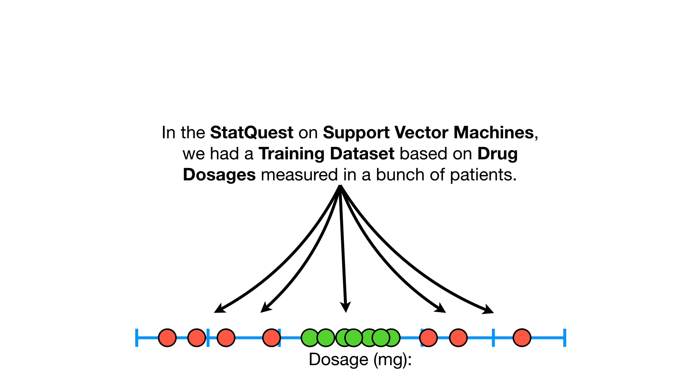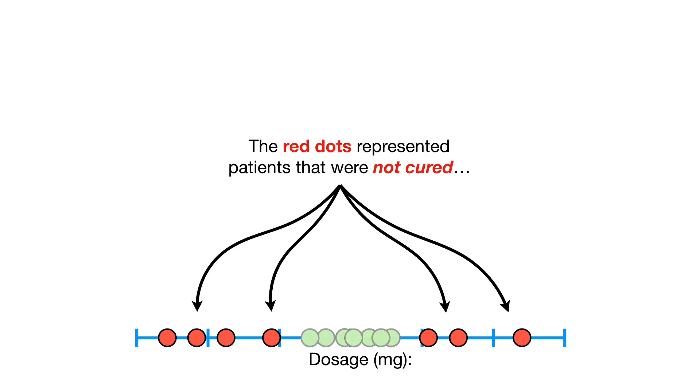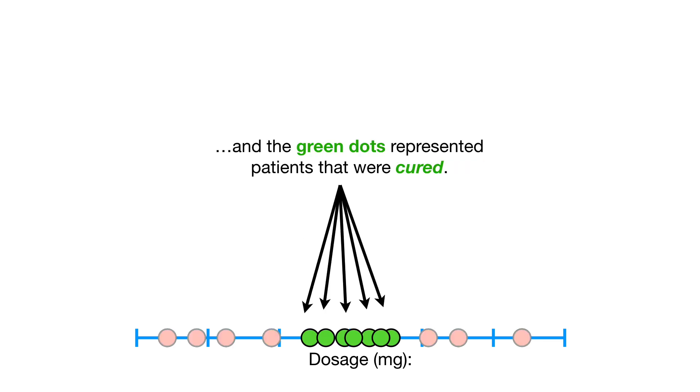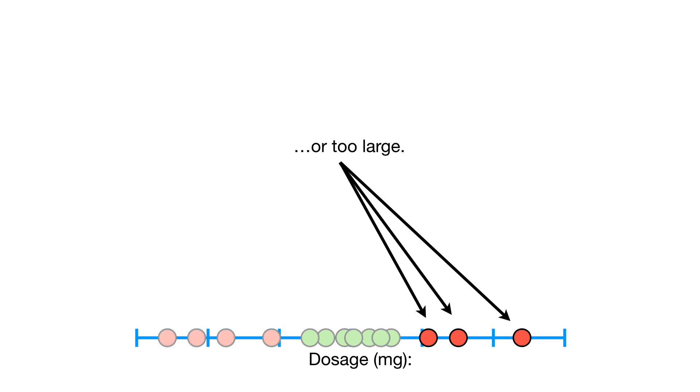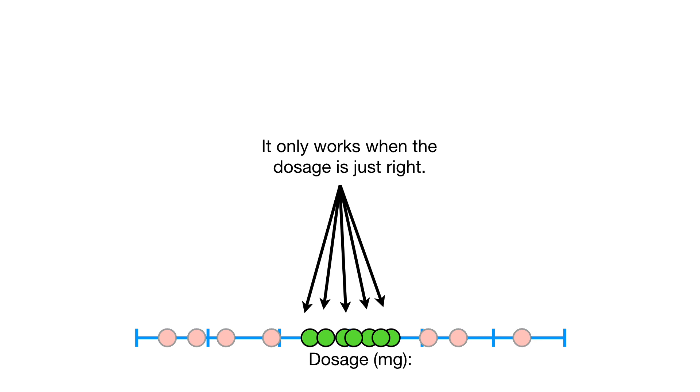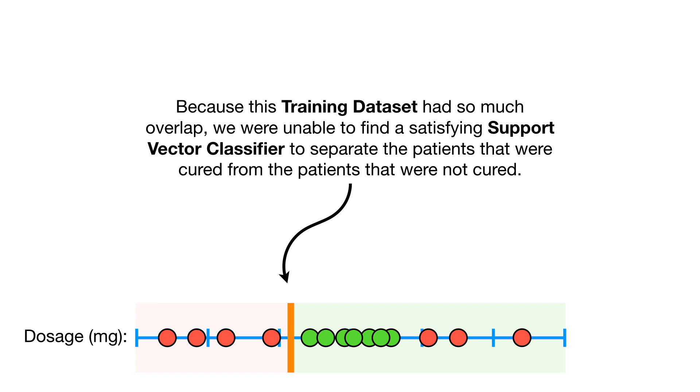In the StatQuest on Support Vector Machines, we had a training dataset based on drug dosages measured in a bunch of patients. The red dots represented patients that were not cured, and the green dots represented patients that were cured. In other words, the drug doesn't work if the dosage is too small or too large. It only works when the dosage is just right. Because this training dataset had so much overlap, we were unable to find a satisfying Support Vector classifier to separate the patients that were cured from the patients that were not cured.